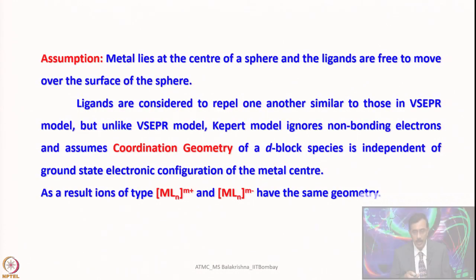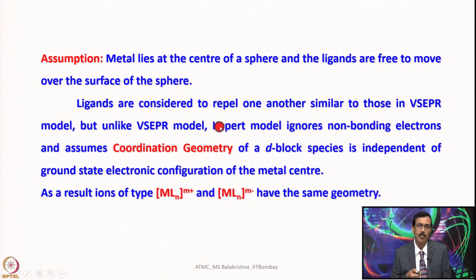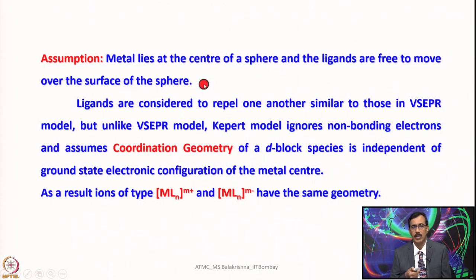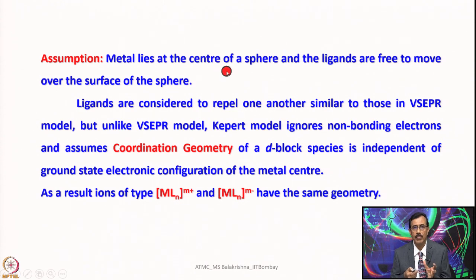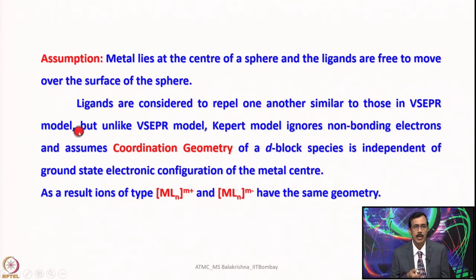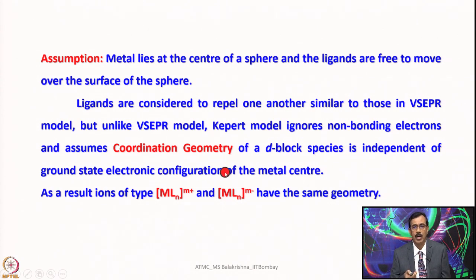Some assumptions were made to accommodate VSEPR theory for d-block complexes. The Kepert model assumes the metal lies at the center of a sphere, ligands are free to move about the surface of the sphere and occupy positions as far apart from each other as possible to minimize repulsion. Unlike the VSEPR model, the Kepert model ignores non-bonding electrons and assumes the coordination geometry of a d-block species is independent of the ground-state electronic configuration of the metal center.